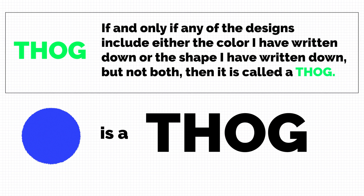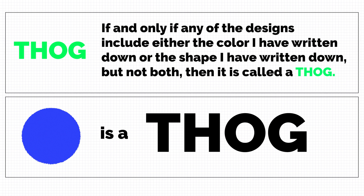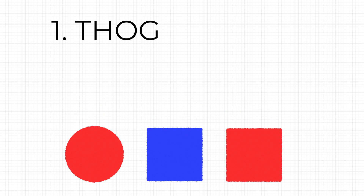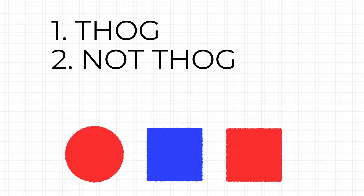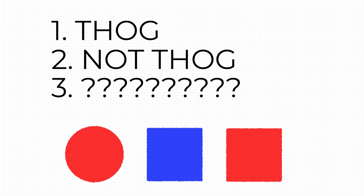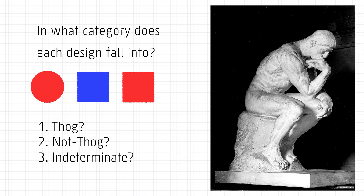So now that you know what it means to be a THOG and you know that the blue circle is a THOG, each of the remaining three designs falls into one of these three categories: one, it's definitely a THOG; two, it's definitely not a THOG; or three, there's insufficient evidence to decide if it is or isn't a THOG. In what category does each of the remaining three designs fall?